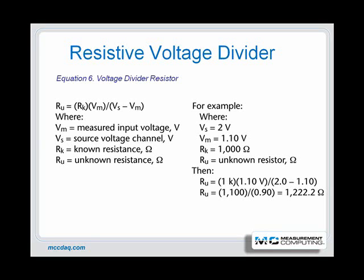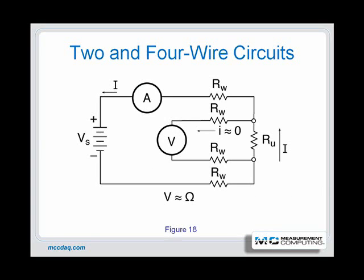For example, where V sub S equals 2 volts, V sub M equals 1.10 volts, and R sub K equals 1,000 ohms, then R sub U, the unknown resistor, equals 1,222.2 ohms.